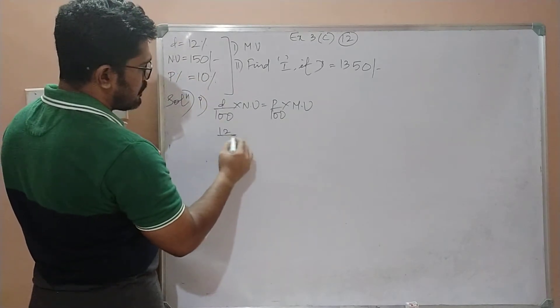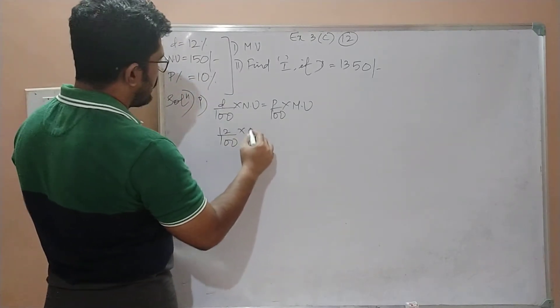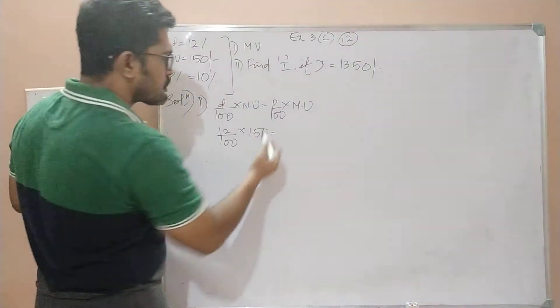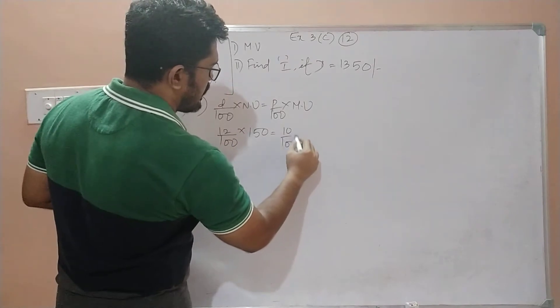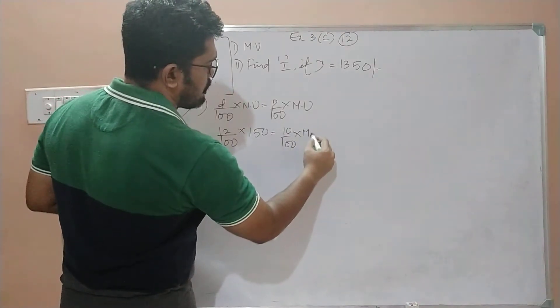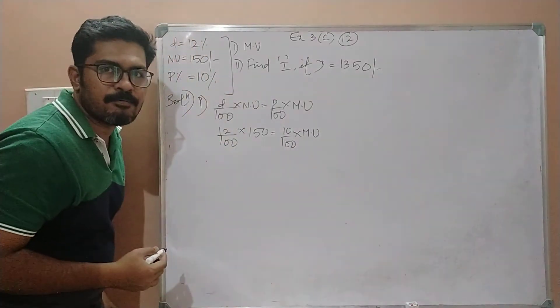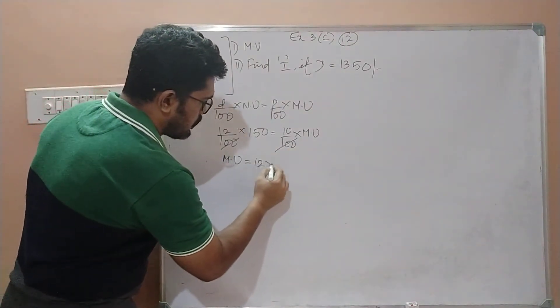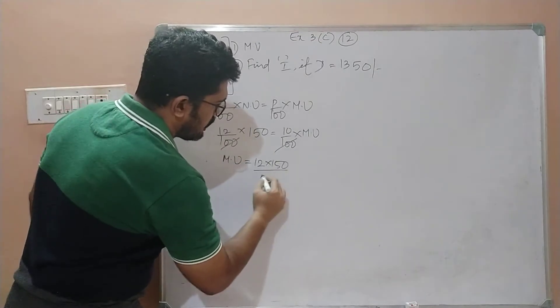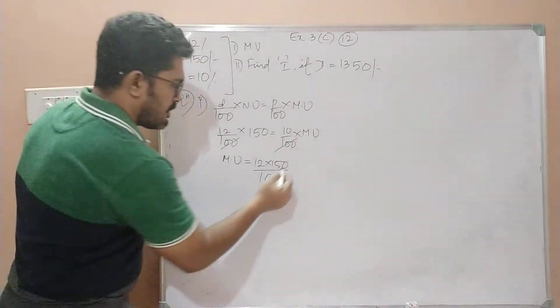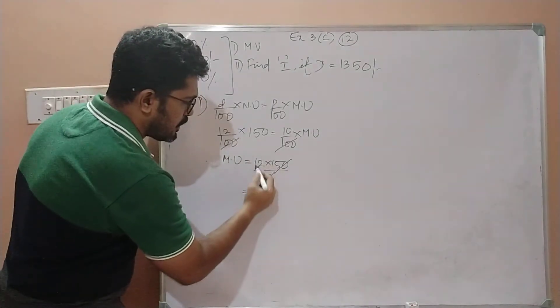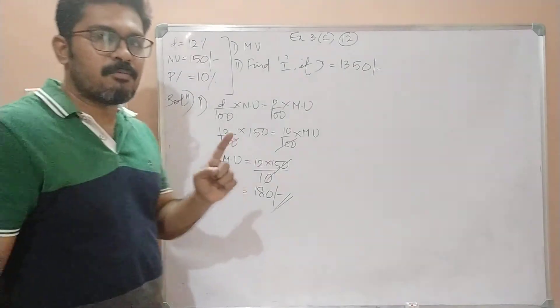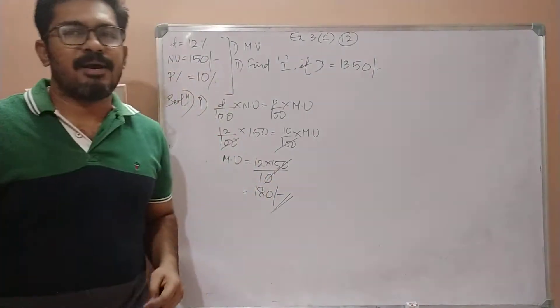d/100, so 12/100 × the nominal value 150, which is equal to p, that is 10/100 × the market value which we need to find. Let us cancel 100 and 100. Therefore mv is equal to 12 × 150 ÷ 10, which equals 180 rupees. Hence the market value of one share is 180 rupees.